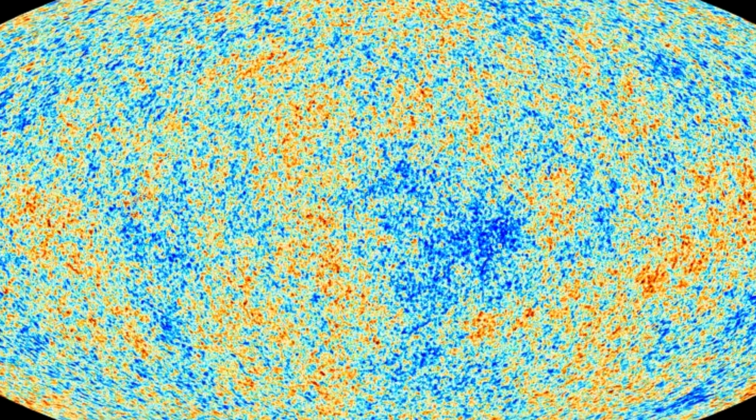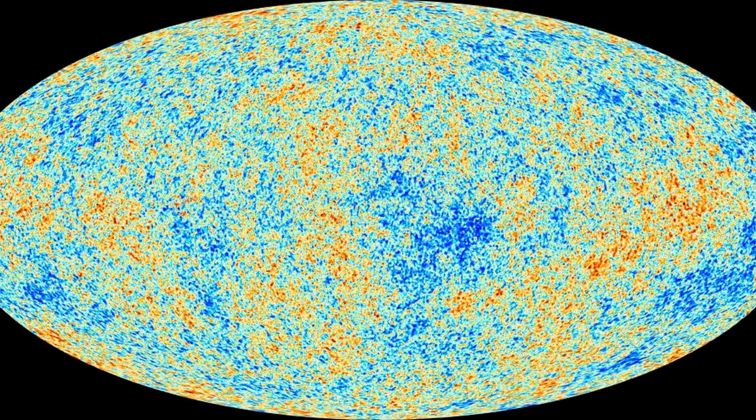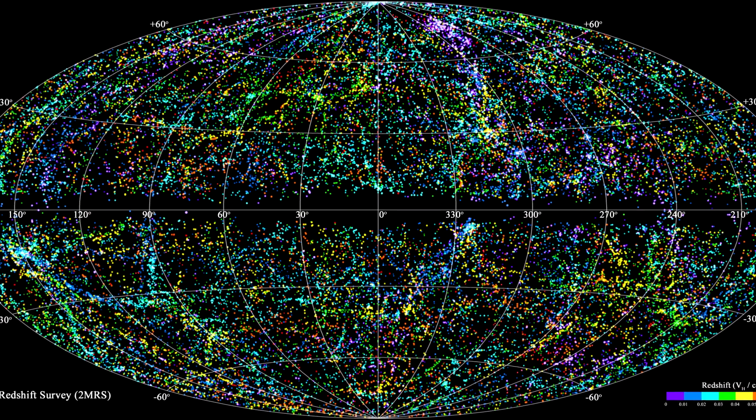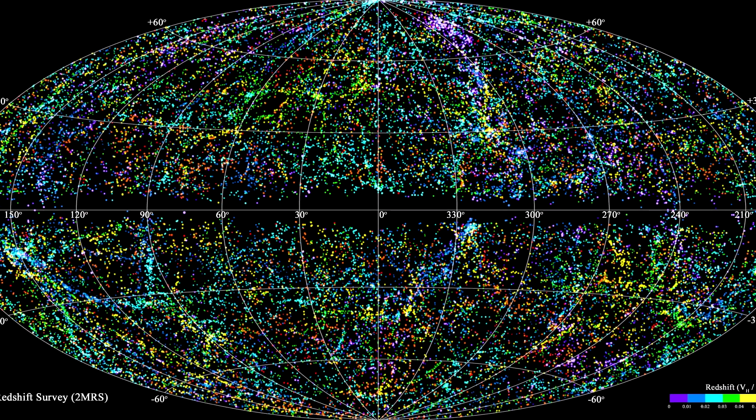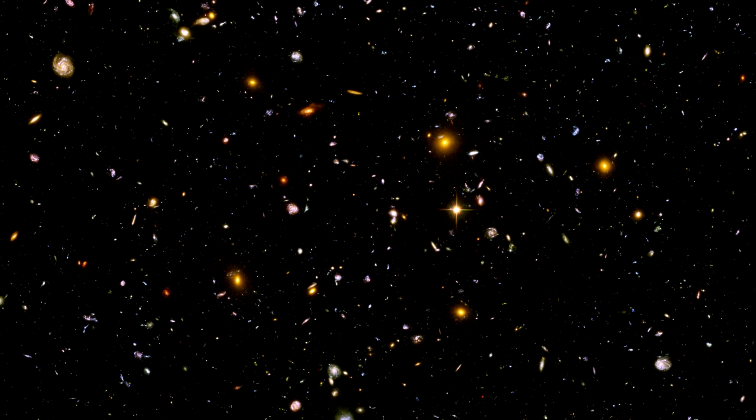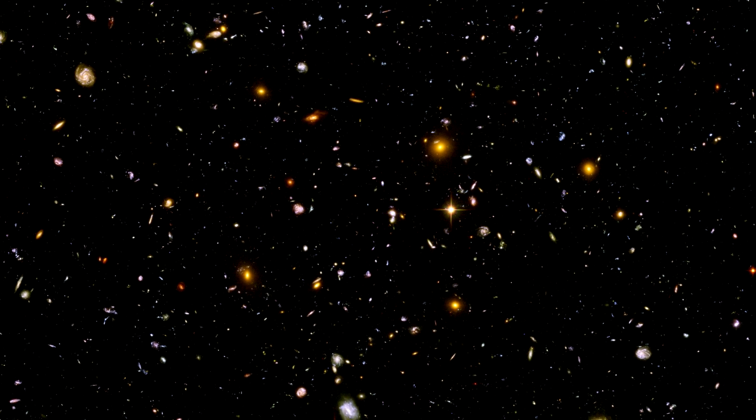Kirshner and his team utilized this redshift information as a tool to construct a three-dimensional map of the universe. In short, they were using the motion of galaxies, inferred from redshifts, to create a detailed representation of the spatial arrangement of celestial objects in our vast cosmos. As the astronomers continued to create their map of the universe, they noticed something unusual.